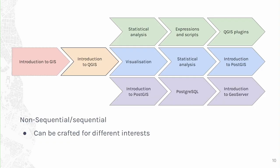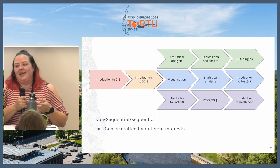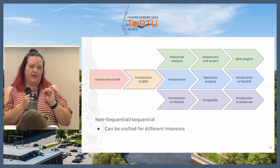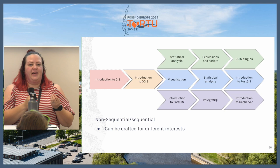And then a bit of the non-sequential path, which can be crafted more to different interests. We have introduction to GIS and introduction to QGIS for the basics, and then you can specify your different needs or interests. For example, one track might go into statistical analysis, processing, expressions, workflow management, and then QGIS plugins. You can jump between these courses, and while some prerequisite skills may be needed before attending one course, they should be quite minimal, so the basics need to be taught in every course.